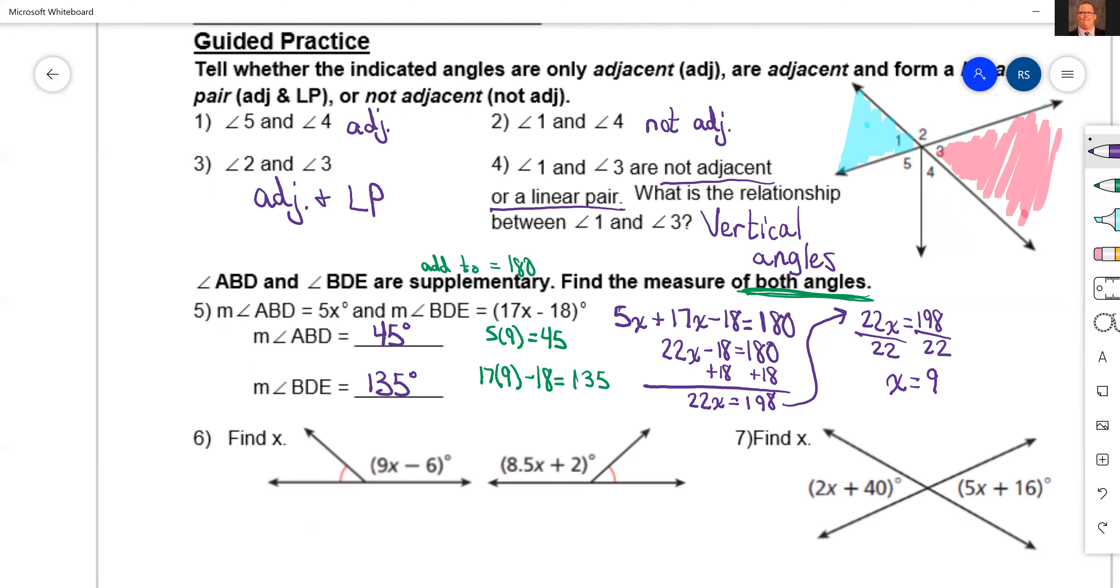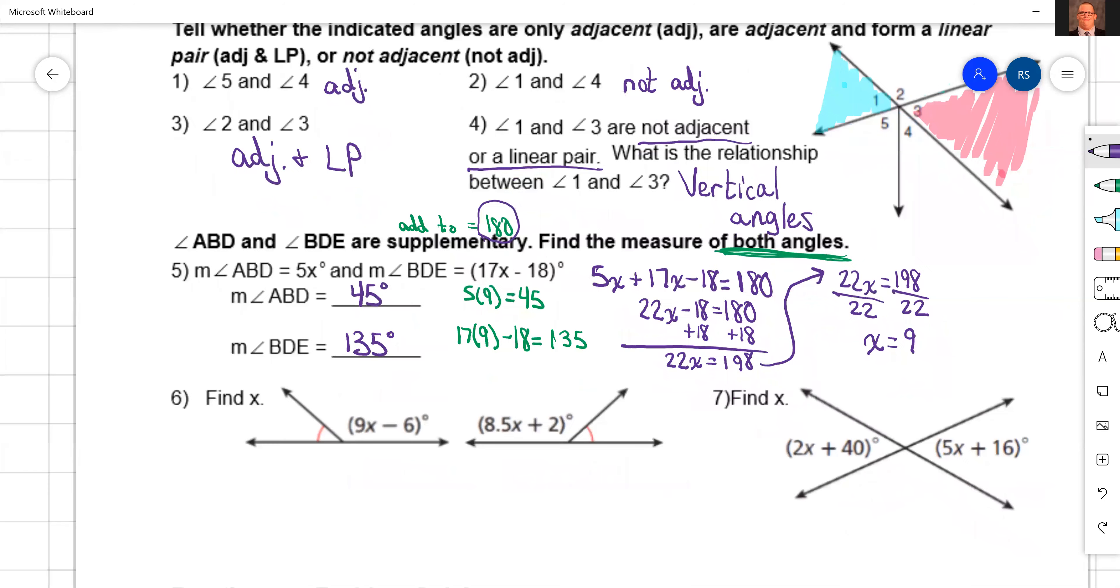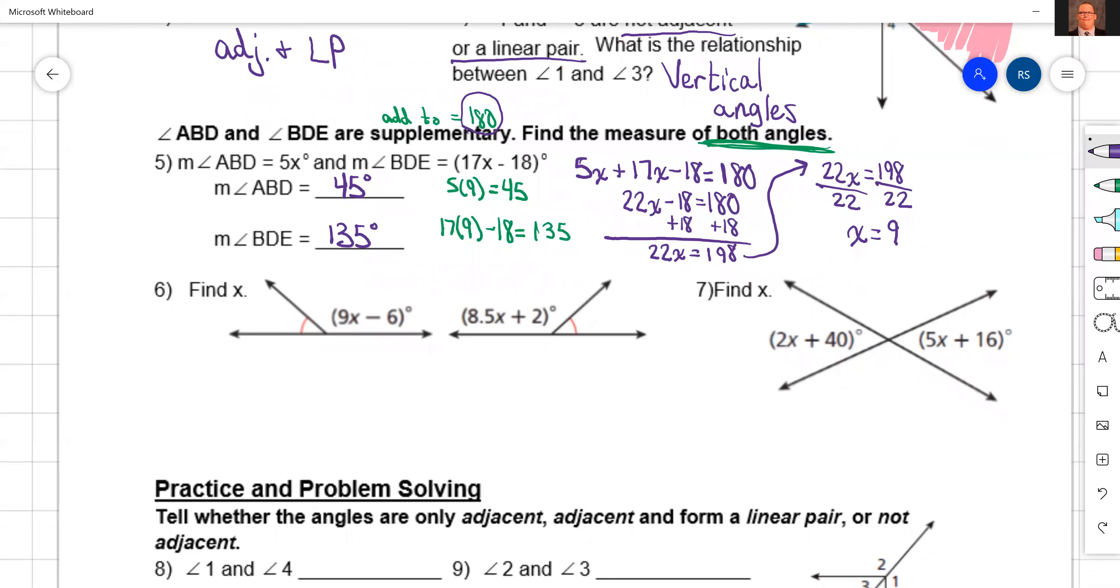Now let's say you want to be 100% sure you're right. What should both of these angles add to that we just found? 180. So if you want to be 100% sure you're right, add those together and you should get 180. In this case we do.